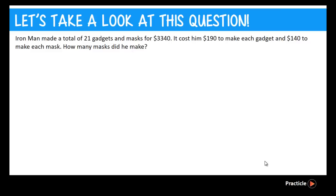Let's take a look at this question. Iron Man made a total of 21 gadgets and masks for $3,340. It cost him $190 to make each gadget and $140 to make each mask. How many masks did he make?